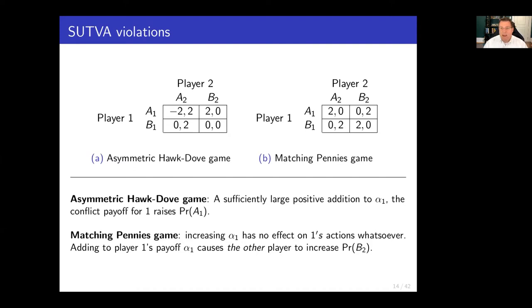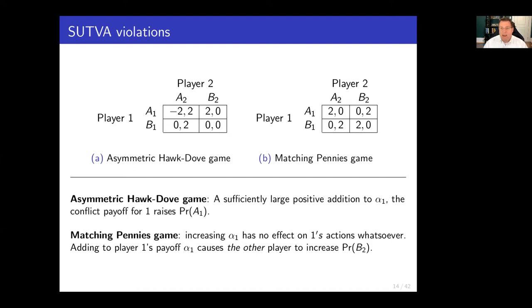So we've got two games similar in structure, but because the treatment vectors are different, we see both sets of SUTVA violations in action. We see a case where changes to player one's payoffs change player two, and also cases where another player's treatment conditions — and also my own other treatment conditions — change the effect of the treatment on my behavior: it can be positive or it can be zero. Here's a Rubenstein bargaining model — a model that underlies a lot of work in legislative bargaining, deal-making, and international conflict, among others. You can find the same sorts of SUTVA violations in this game. Specifically, if you change one player's patience factor, that is going to change the behavior of another player. Player one changes their offer X in equilibrium, even though player two's observed behavior in equilibrium doesn't change.